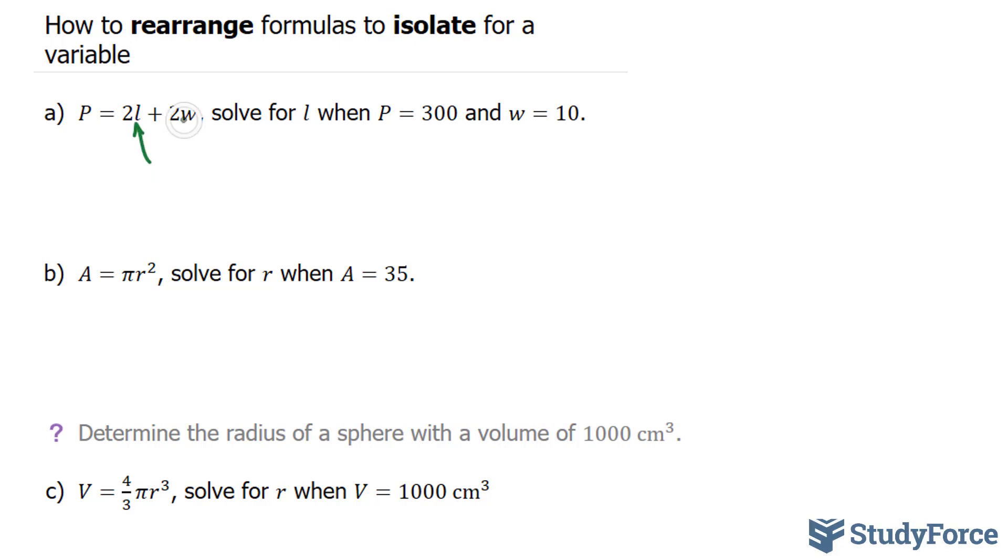And what we have to do is move this term over, this 2W, move it over to the other side, where we end up with P minus 2W is equal to 2L. Notice how this 2W was initially positive, and then by moving it over to the other side, it becomes negative.